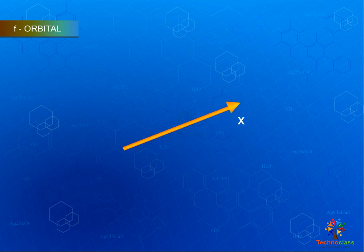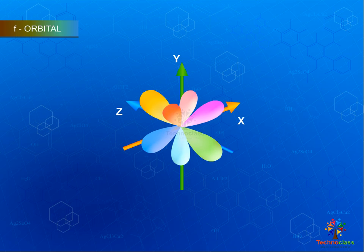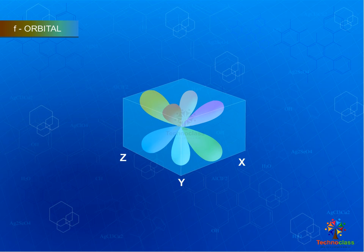F orbital or fundamental orbital possesses seven possible orientations. The shape of f orbital is sevenfold degenerate shape.